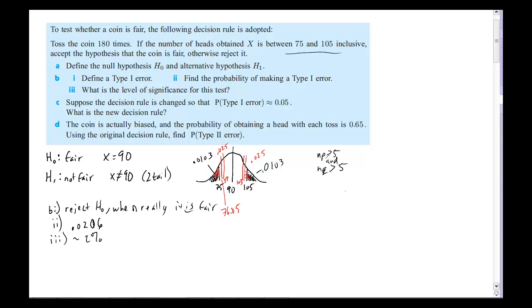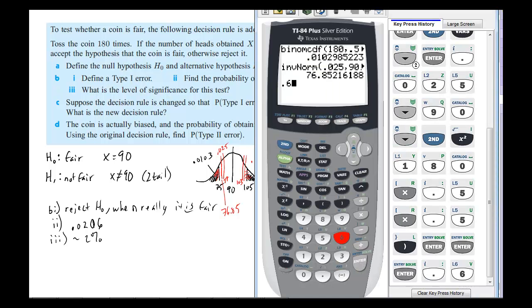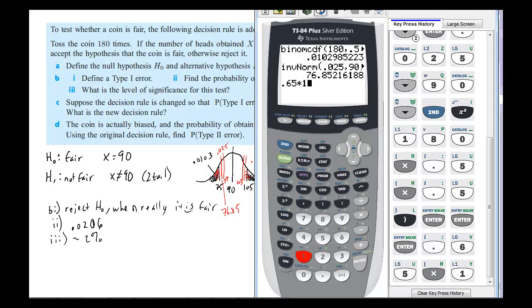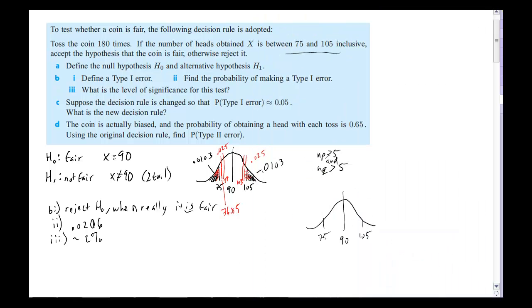So, we move on to letter D. The coin is actually biased, and the probability of obtaining a head with each coin toss is 0.65. Using the original decision rule, find the probability of a type 2 error. Okay, so let's go back. So, I have my original line here, right, which had a 90, and it was 75 and 105. So, now what they're saying is that in reality, the average is not going to be 90. It's going to be 0.65 times 180, which will be 117. So, 117 is way over here, which means, yeah, it's pretty biased.